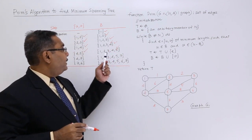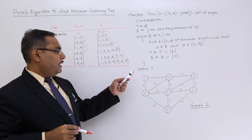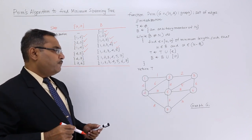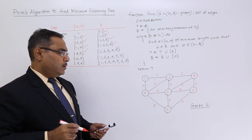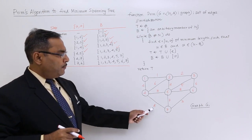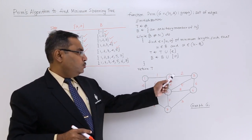Now we are having 1, 2, 3, 4, 5. From 1, 2, 3, 4, 5, what is the edge? I think that is edge 4-7, because